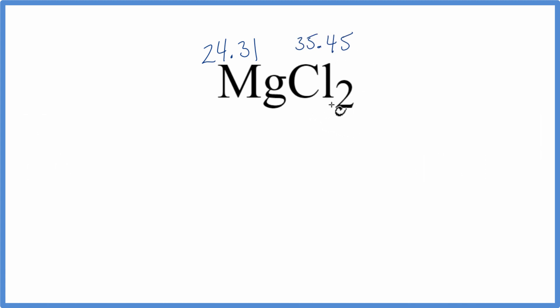So to find the molar mass, we'll add up the atomic masses for all of these elements here. So for magnesium, we have 24.31 grams per mole, plus chlorine is 35.45 grams per mole, but we have two chlorine atoms. This two applies to the chlorine only. So we'll multiply that by two.